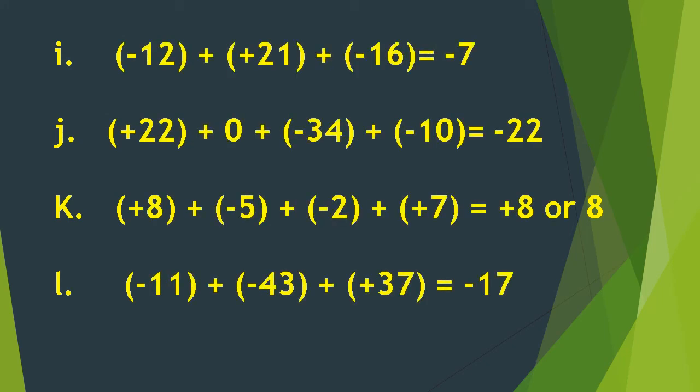Letter I: negative 12 plus positive 21 plus negative 16 is equal to negative 7. We first add negative 12 and negative 16 because they have the same sign, giving negative 28. Then negative 28 plus positive 21 gives the answer negative 7.